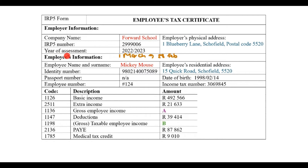Next is the employee's information. This employee's name is Mickey Mouse. He has an ID number but not a passport number. Something interesting is the employee number — a unique number because in this company there are many employees, and this person is number 124. Every employee has a unique number because they all need to get paid and their employer needs to pay their tax. We also see the residential address, date of birth, and finally an income tax number — a unique number that every individual has at SARS to differentiate them from others, used to identify them for tax purposes.